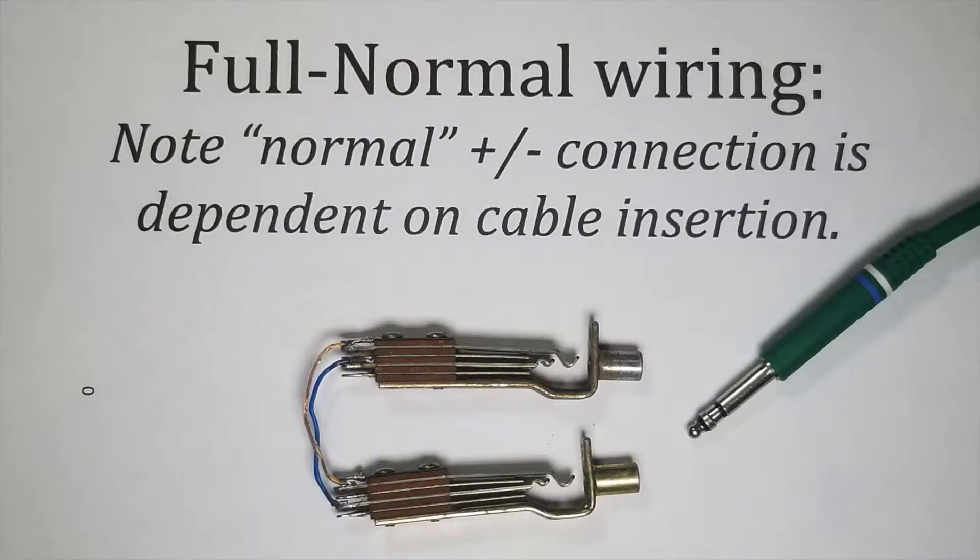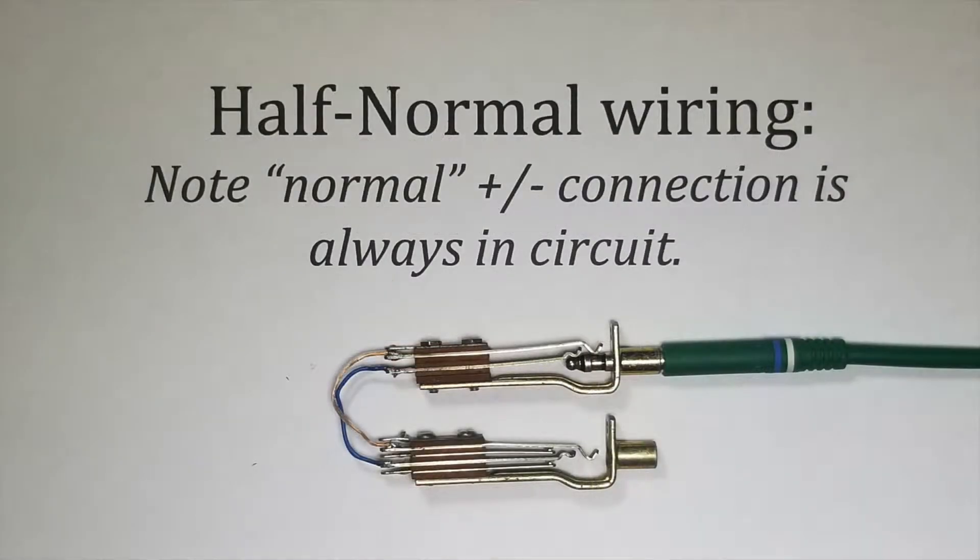Full normalling is best used for tape returns and mic lines, where the signal needs to be present at all times until a cable is inserted, thus breaking the normal. Half normalling is best used on insert sends, where the signal needs to be present on both the inserted patch cable and the jack below it simultaneously. This allows for the insertion of a device without interrupting the signal flow while a connection is being made.